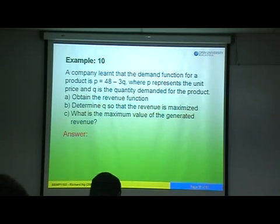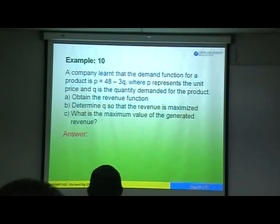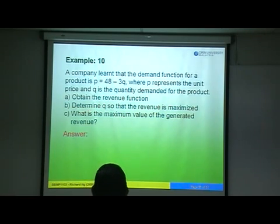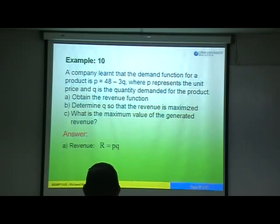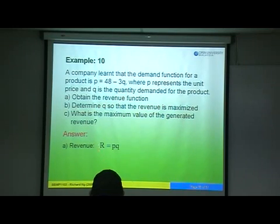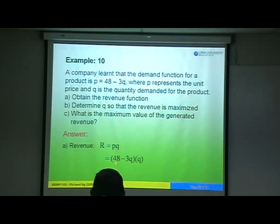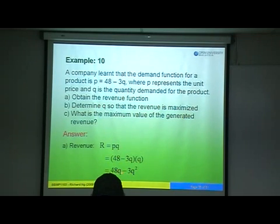The company learned that the demand function for a product is P equals 48 minus 3Q, where P represents the unit price and Q the quantity. We are asked to obtain the revenue function. Revenue equals P times Q. Since P is 48 minus 3Q, substitute to get 48 minus 3Q times Q, which gives 48Q minus 3Q squared.